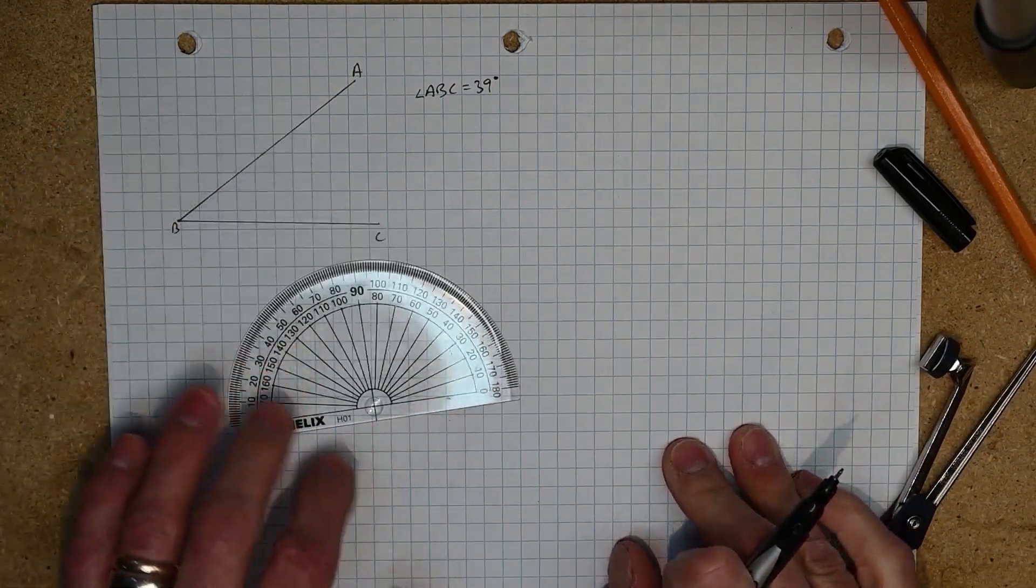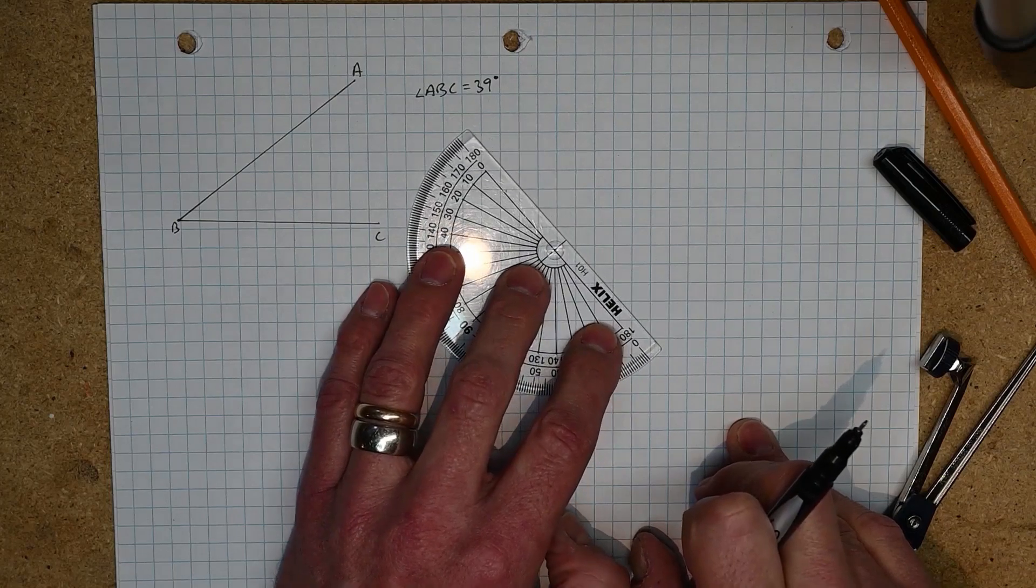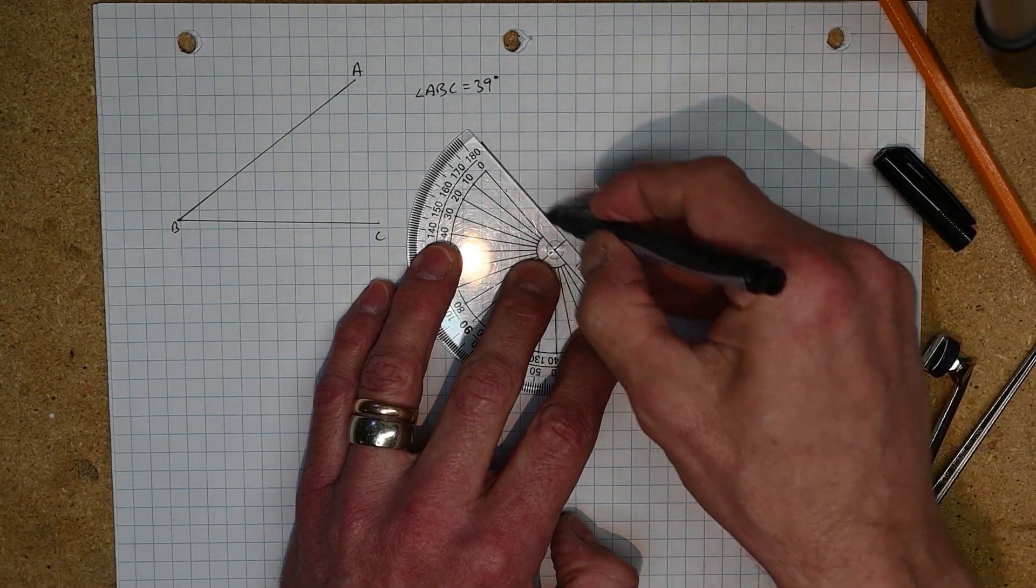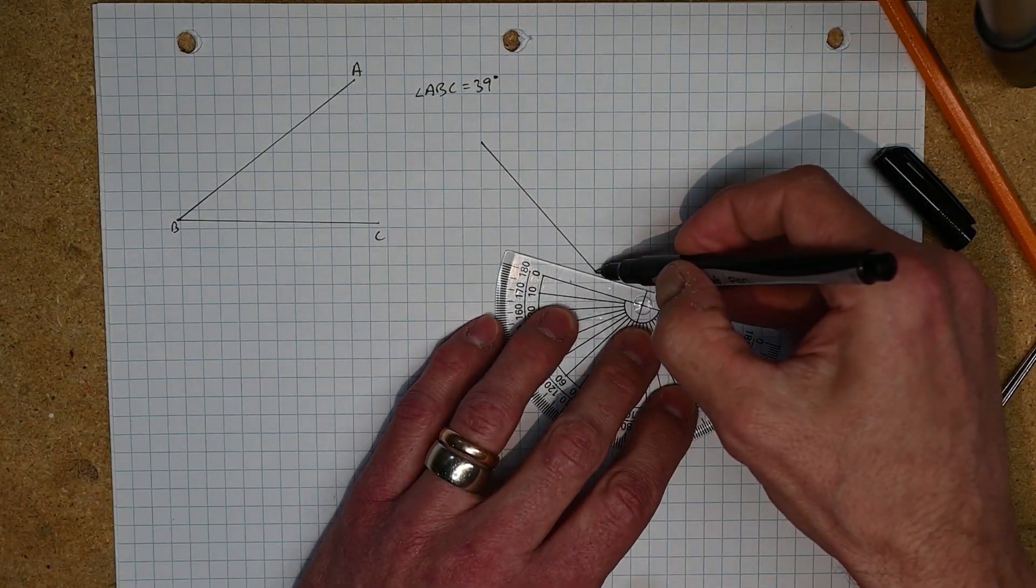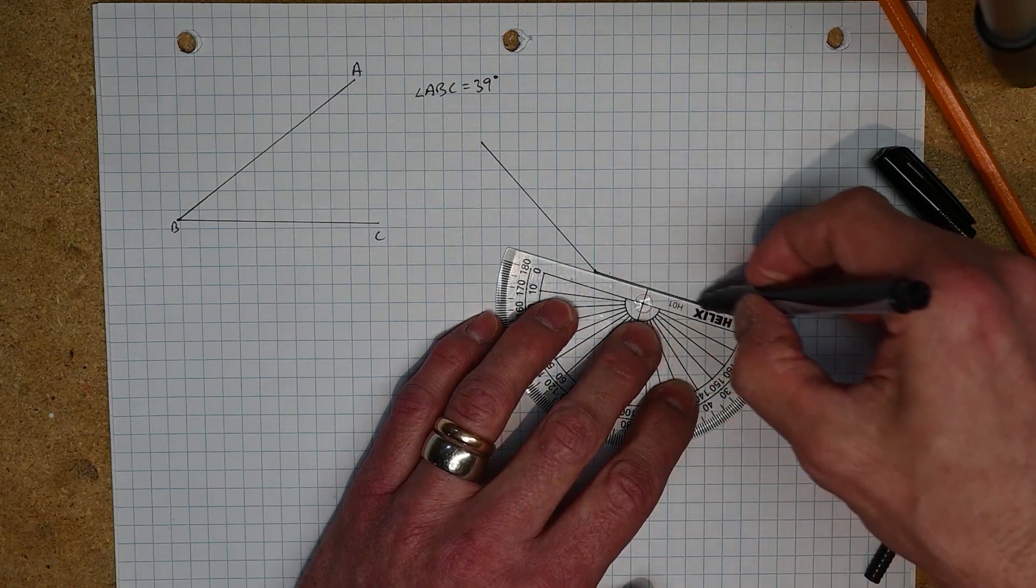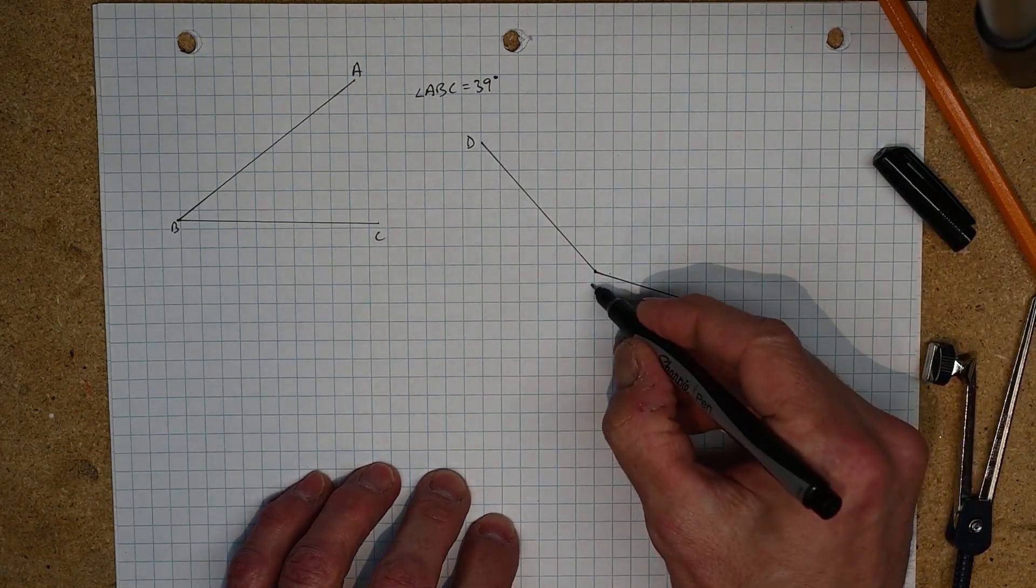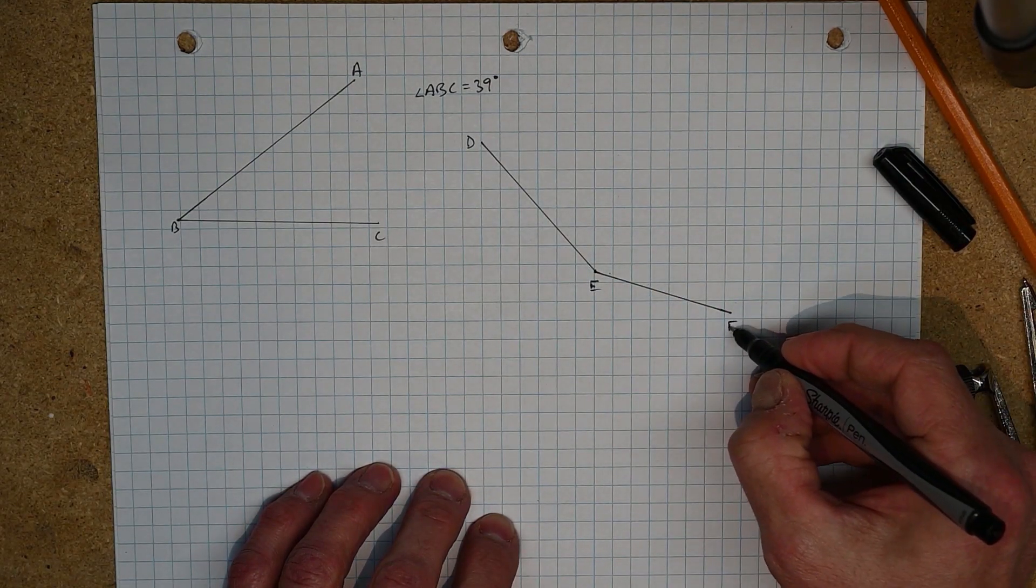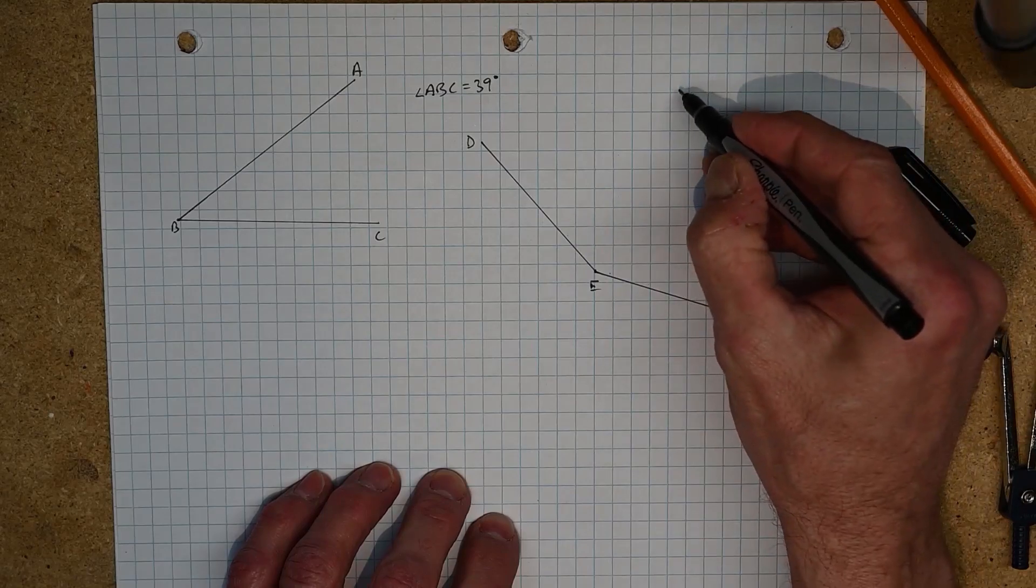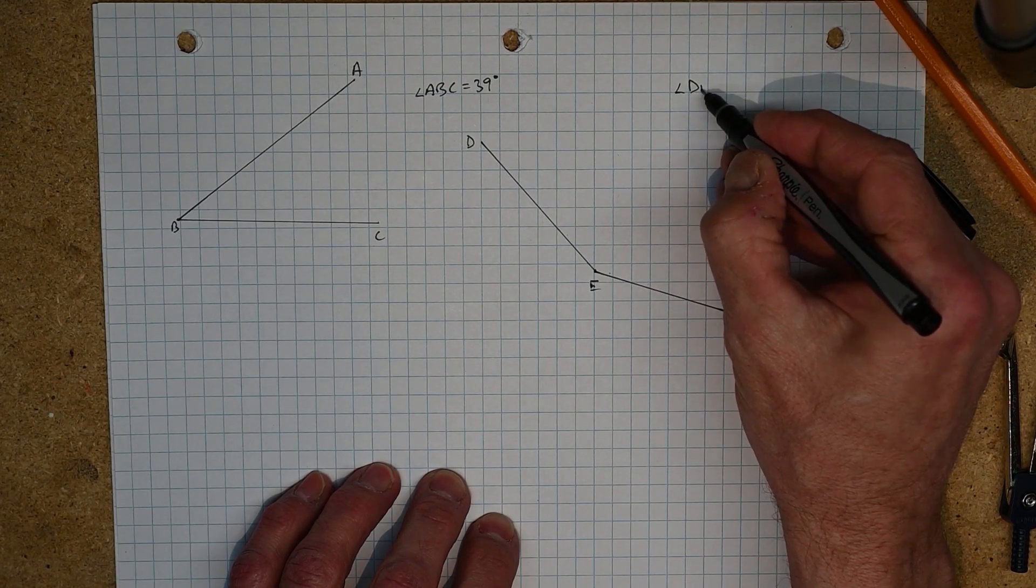Now as you know we can get acute angles, we can get right angles, and sometimes we get things called obtuse angles. So let's make ourselves an obtuse angle this time and we'll do our best to measure it. Call this guy DEF, so now I'm going to measure angle DEF.